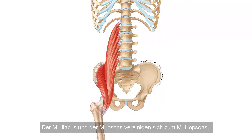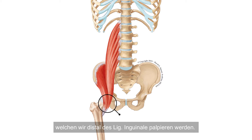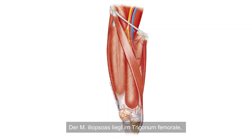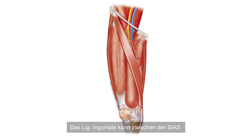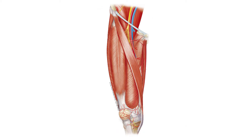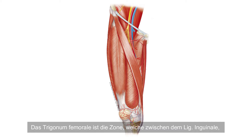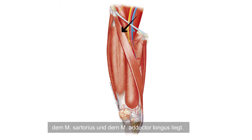The iliacus muscle and the psoas muscle converge to the iliopsoas muscle, which you will palpate distally of the inguinal ligament. The iliopsoas lies within the femoral triangle, just medial of the sartorius muscle. The inguinal ligament can be localized between the ASIS and the symphysis. The femoral triangle is defined as the area between the inguinal ligament, the sartorius muscle, and the adductor longus muscle.